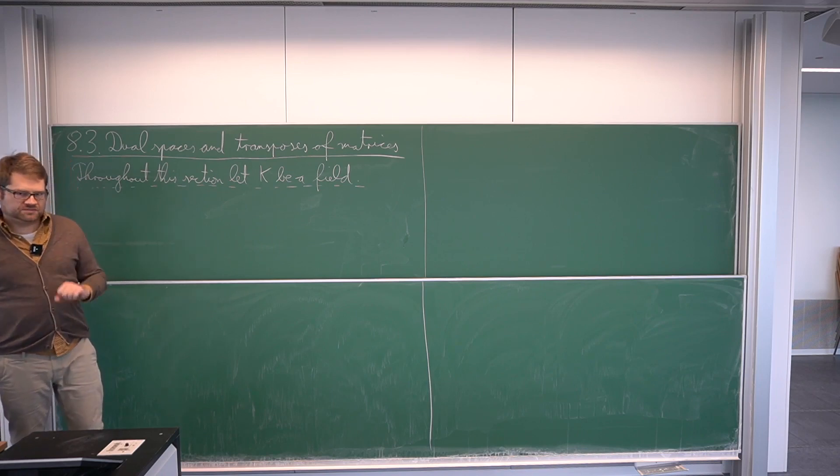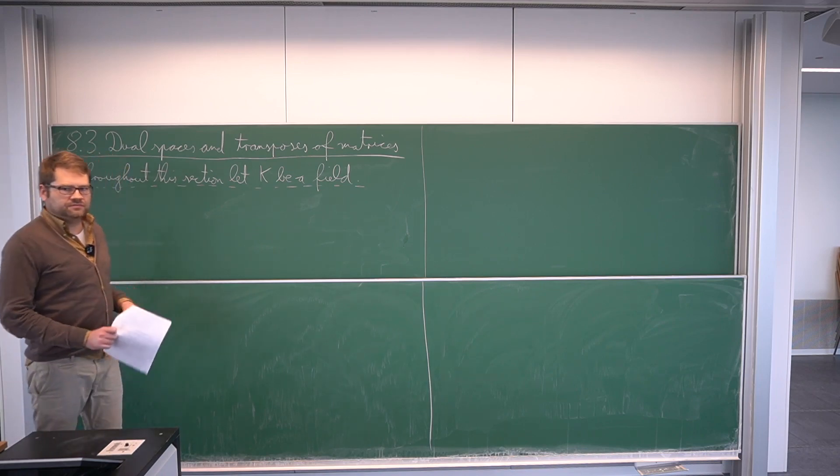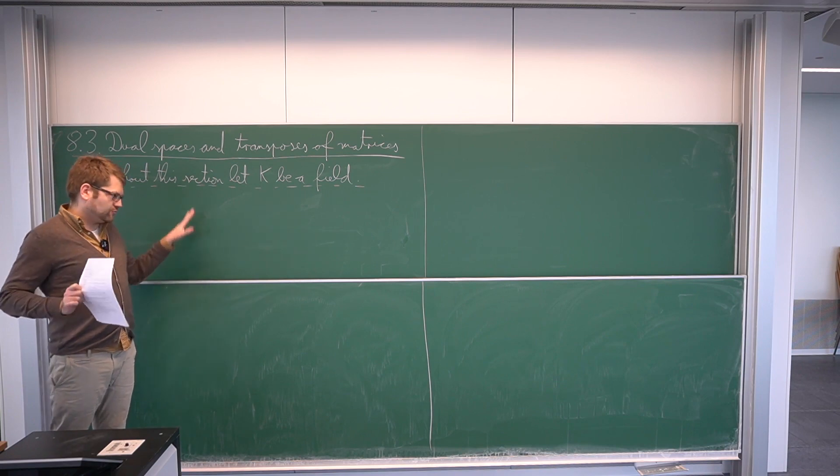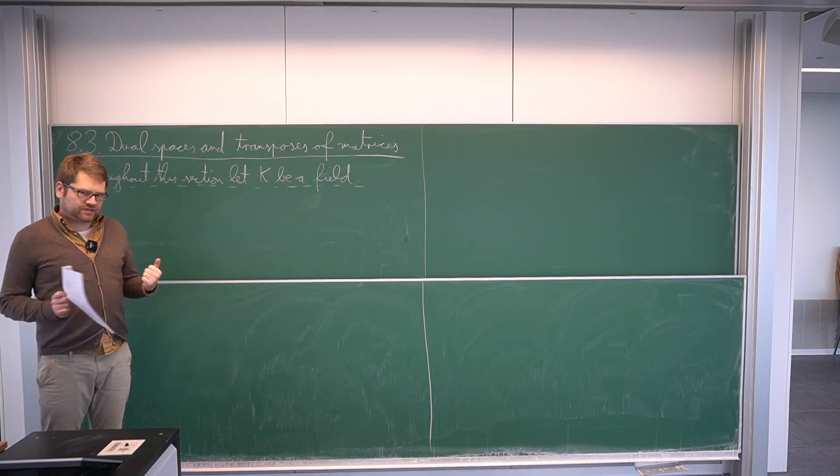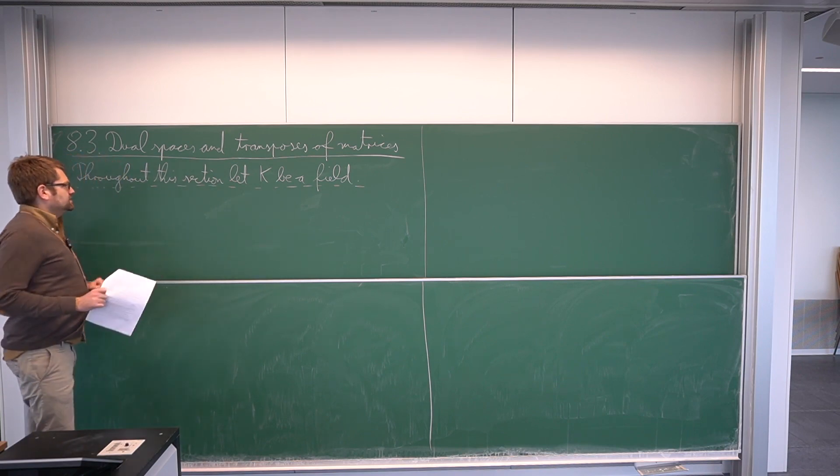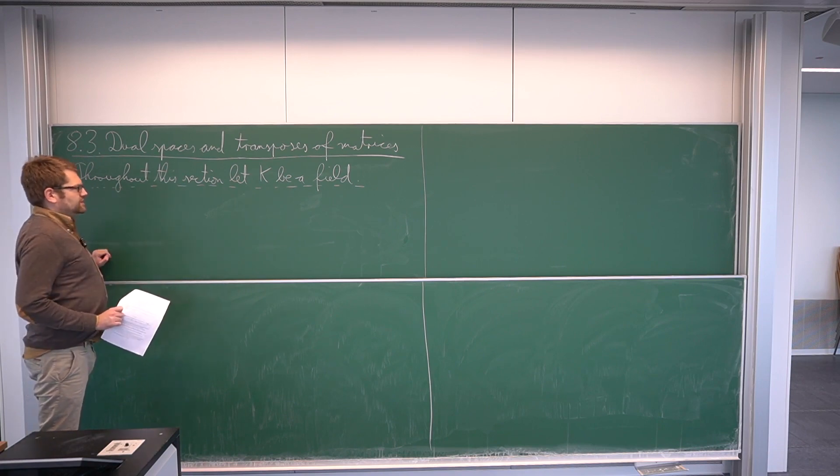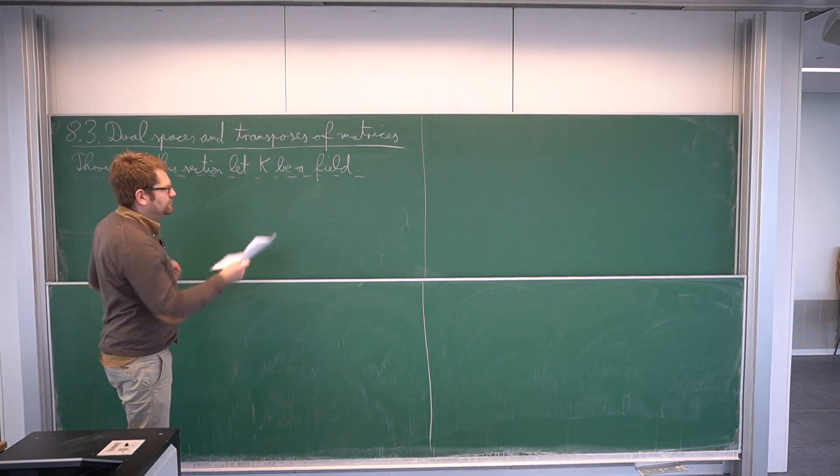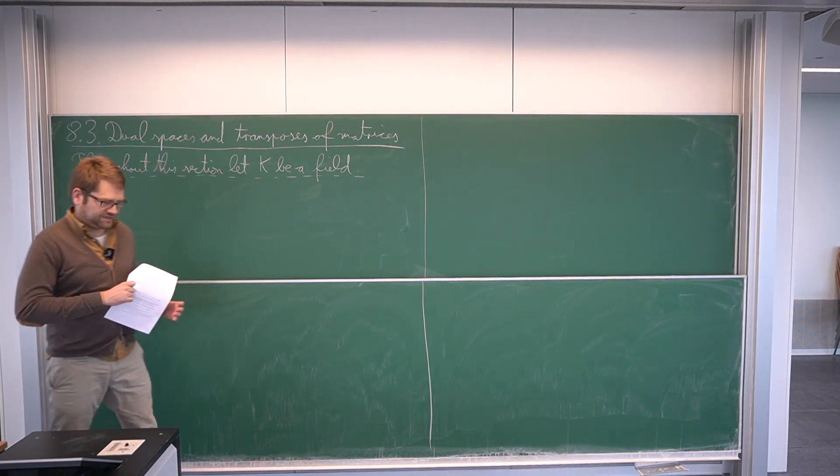Next up, we are going to study so-called dual spaces of vector spaces. This is first a linear algebraic construction that I will outline a bit, and then we will see the connection to matrices again. And as I did basically in every section, I let k be a fixed field throughout all of this section.